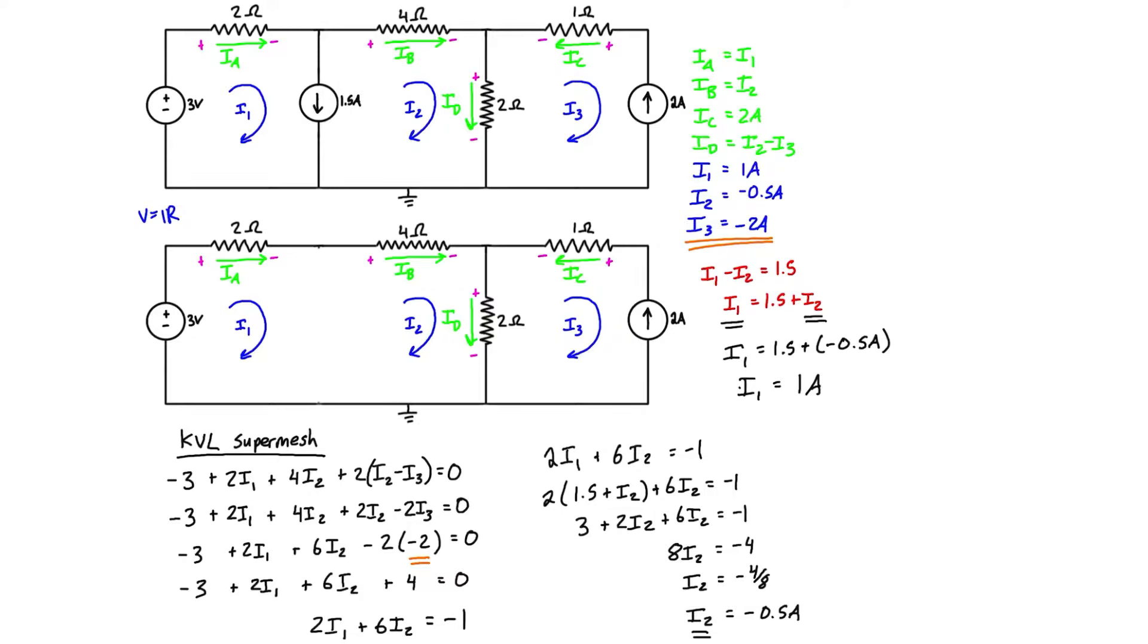But if you were also asked to find the branch currents through the resistors, it's really easy because we have these relationships here already. ia is equal to i1, which is just equal to 1 amp, and because we have a positive value, that means we did get the direction correct and it is going to the right. ib is equal to i2, so ib is just equal to negative 0.5 amps, or what you can say is it's equal to positive 0.5 amps in the other direction, so going like that. ic we already determined—the current was 2 amps going to the left.